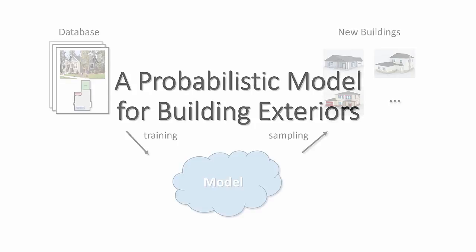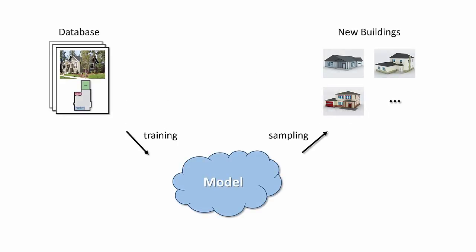In this work, we propose a new framework to model the exterior of residential buildings. The main goal of our work is to design a model that can be learned from data that is observable from the outside of a building.